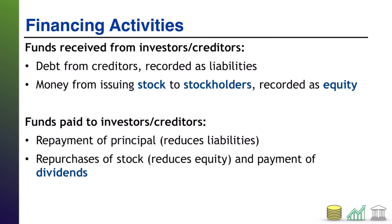I'm going to start off with financing activities. The statement of cash flows has three main sections, which align with the types of activities companies engage in. First up is operating activities, next are investing cash flows, and lastly are financing cash flows. I'm starting with financing because when we think about building a business, the order of operations is typically finance the business, invest in the business, and then begin operating the business. Just know that on a statement of cash flows it reverses: operations, then investing, then financing.